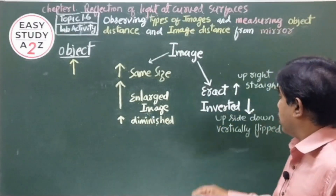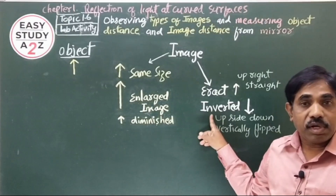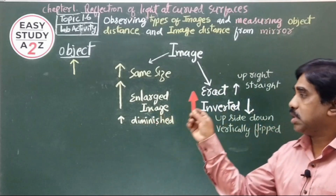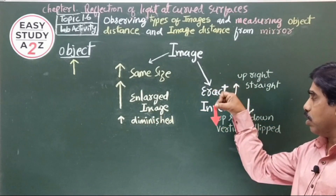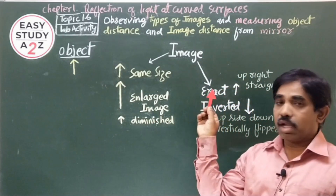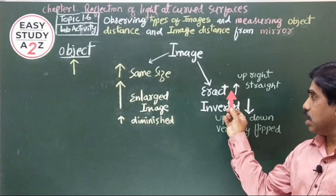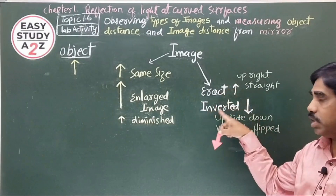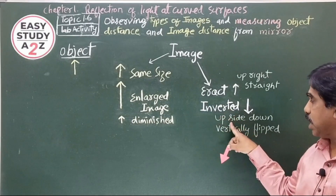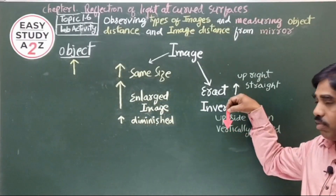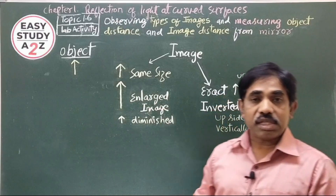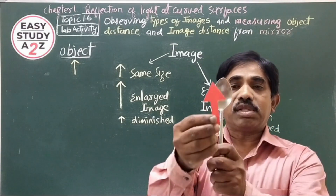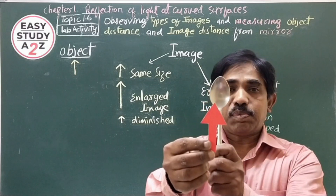Inverted means upside down — the image is flipped vertically downwards. The inverted image is upside down. This type of image you can observe in the concave surface of a spoon.